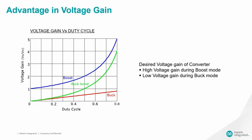As the 4-switch buck-boost converter works either in buck mode or boost mode, it has a superior voltage gain property compared to a conventional buck-boost or SEPIC converter. As a result of this, 4-switch buck-boost converters can handle a wider input voltage range compared to a conventional buck-boost or SEPIC converter.